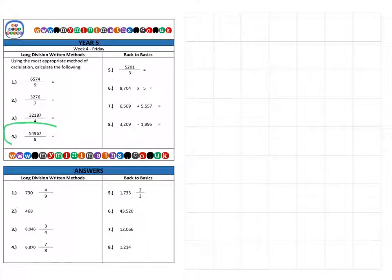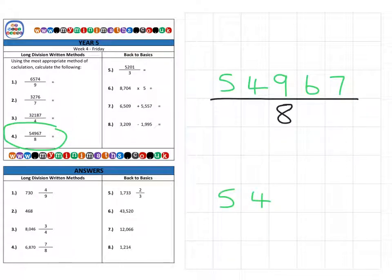And finally, we're on question four. And again, it's a five-digit value, 54,967. And I'm going to divide this by eight. And let's place this into the written method at the bottom. So that's 54,967. I'm going to divide that by the divisor, which is eight.